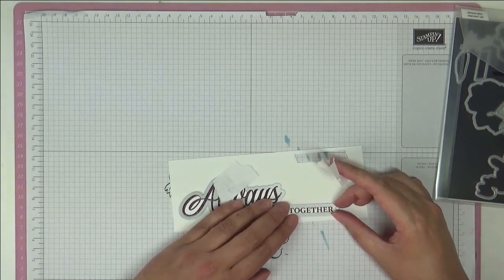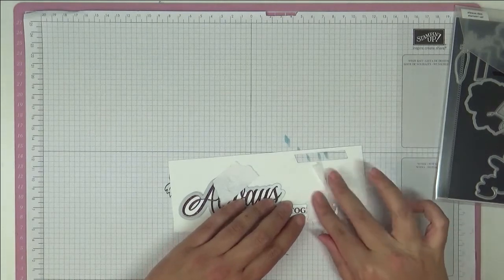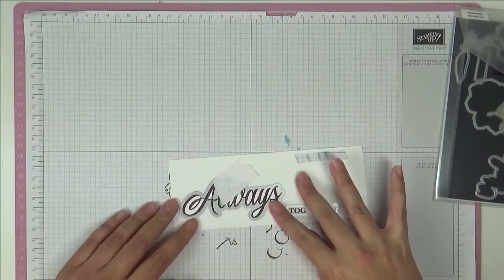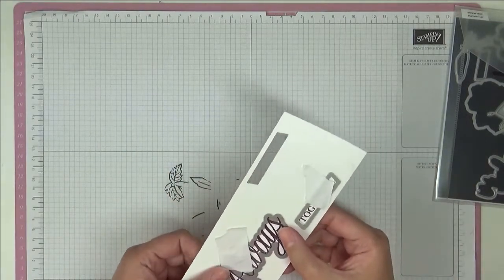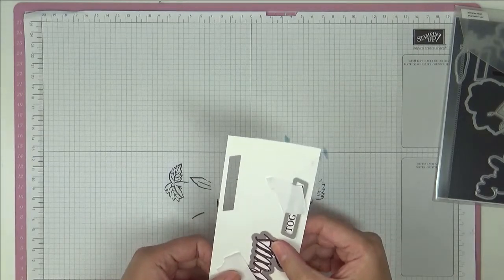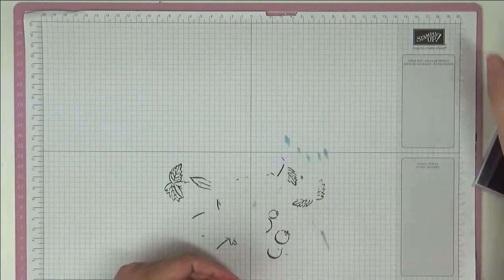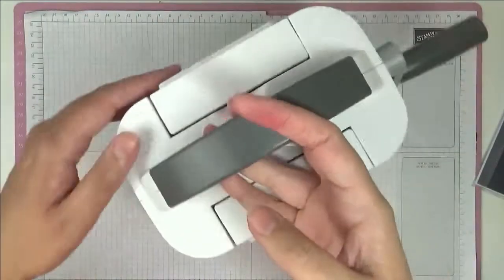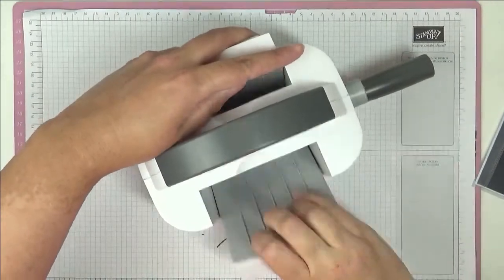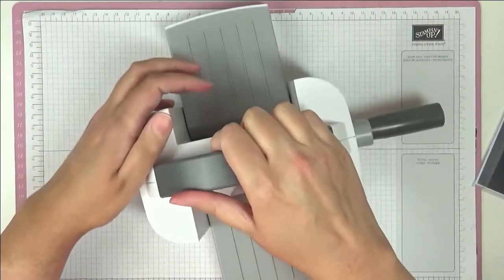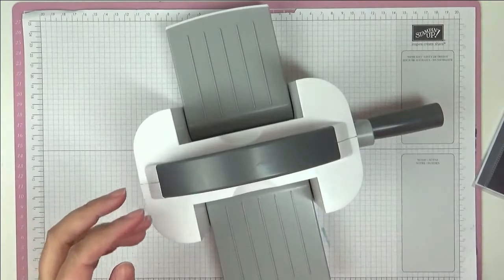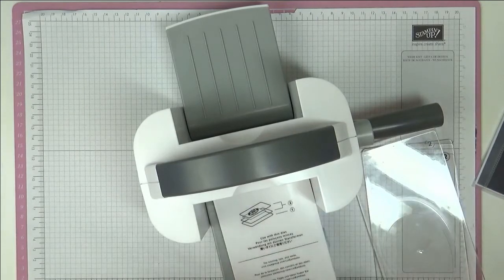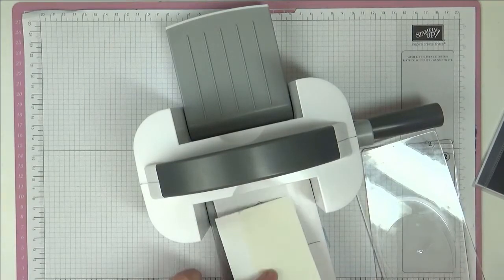We've got our dies down. I've got some adhesive sheet on the back here that should make sticking this down a little bit easier. I'm going to bring in my newest toy, the Stampin' Cut & Emboss mini machine. We're going to run this through, so let me get my plates. I've got my base plate which is number one and then I've got number two.